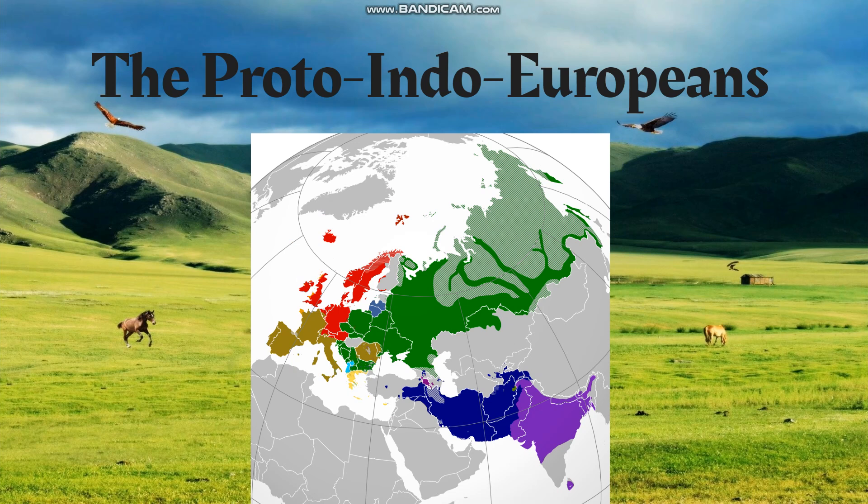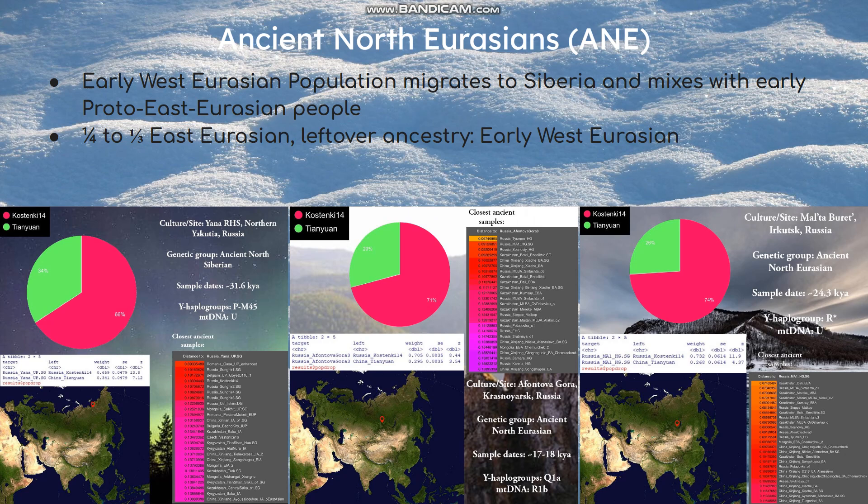In order to understand who these people were, we have to look back into their ancestry. The Ancient North Eurasians were an early West Eurasian population that migrated to Siberia and mixed with Proto-East Eurasian people. They were about one-fourth to one-third East Eurasian, with the leftover ancestry being early West Eurasian, as you can see here — I put some models. West Eurasian encompasses a large group of people, which includes Europeans, North Africans, West Asians, South Asians, South Central Asians, and the Caucasoid, Indo-Aryan, and Iranic Central Asians.